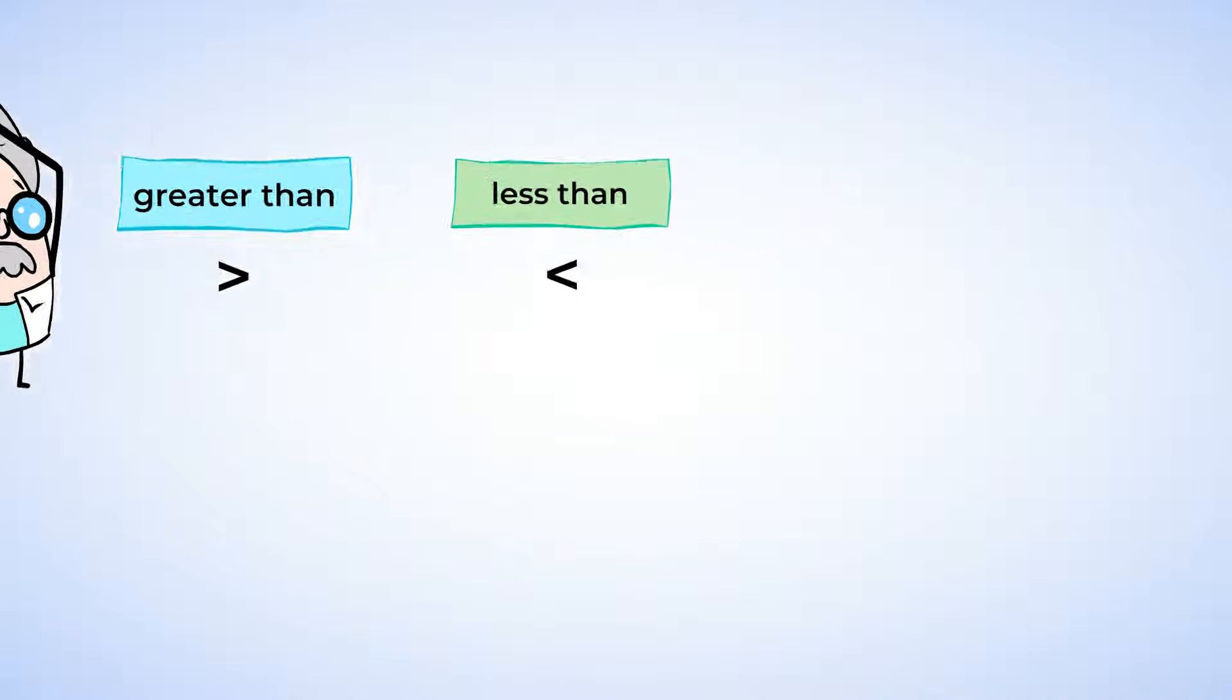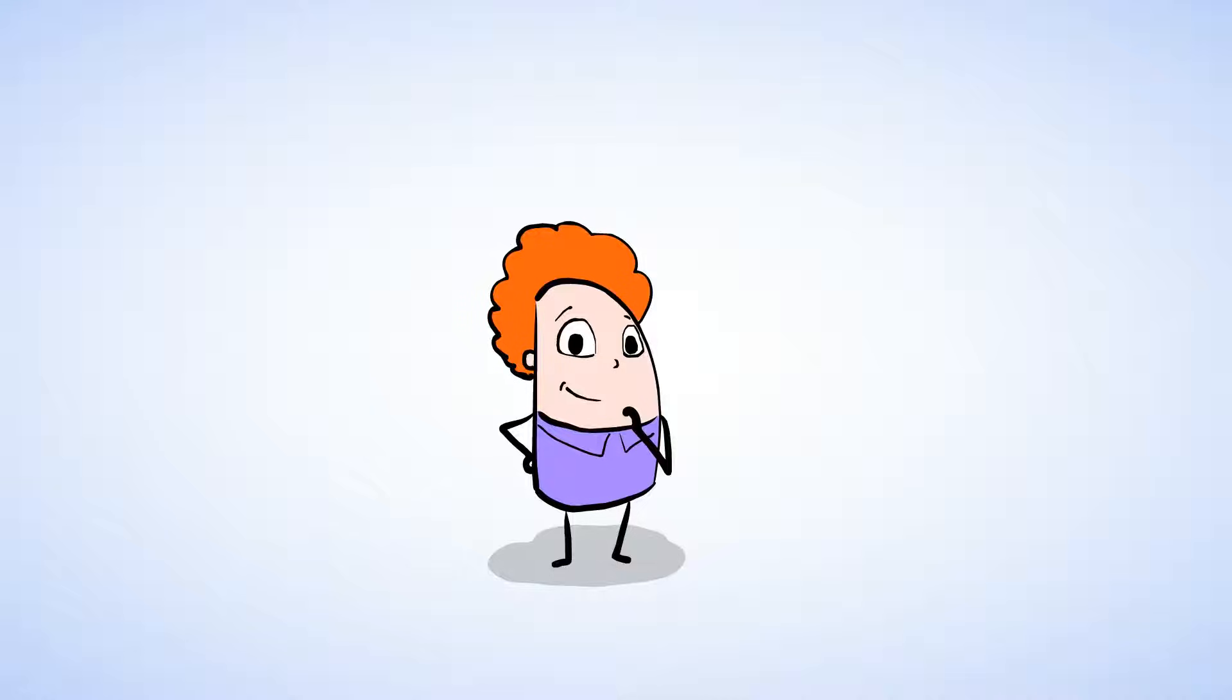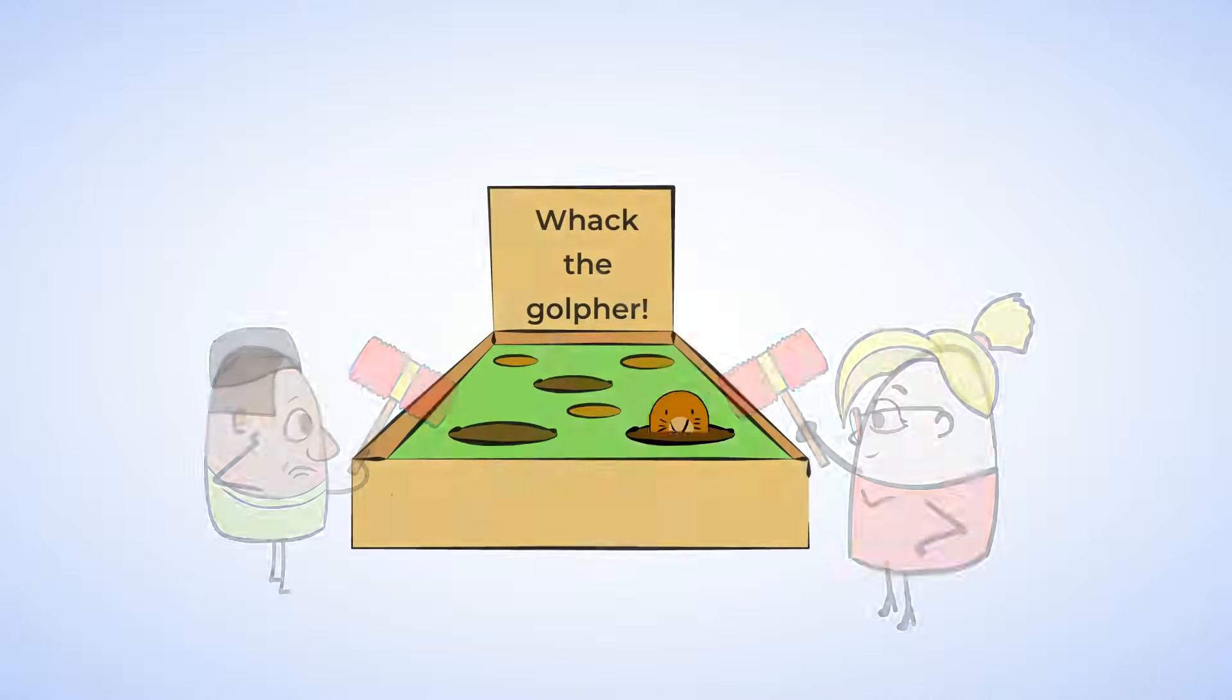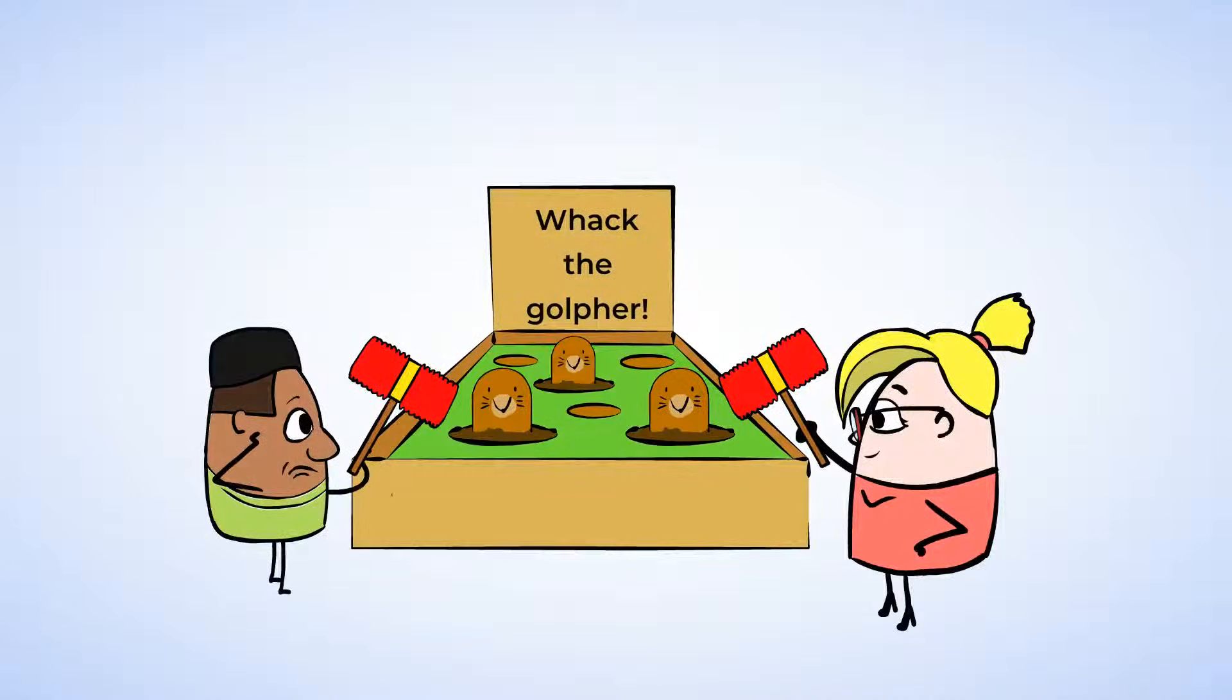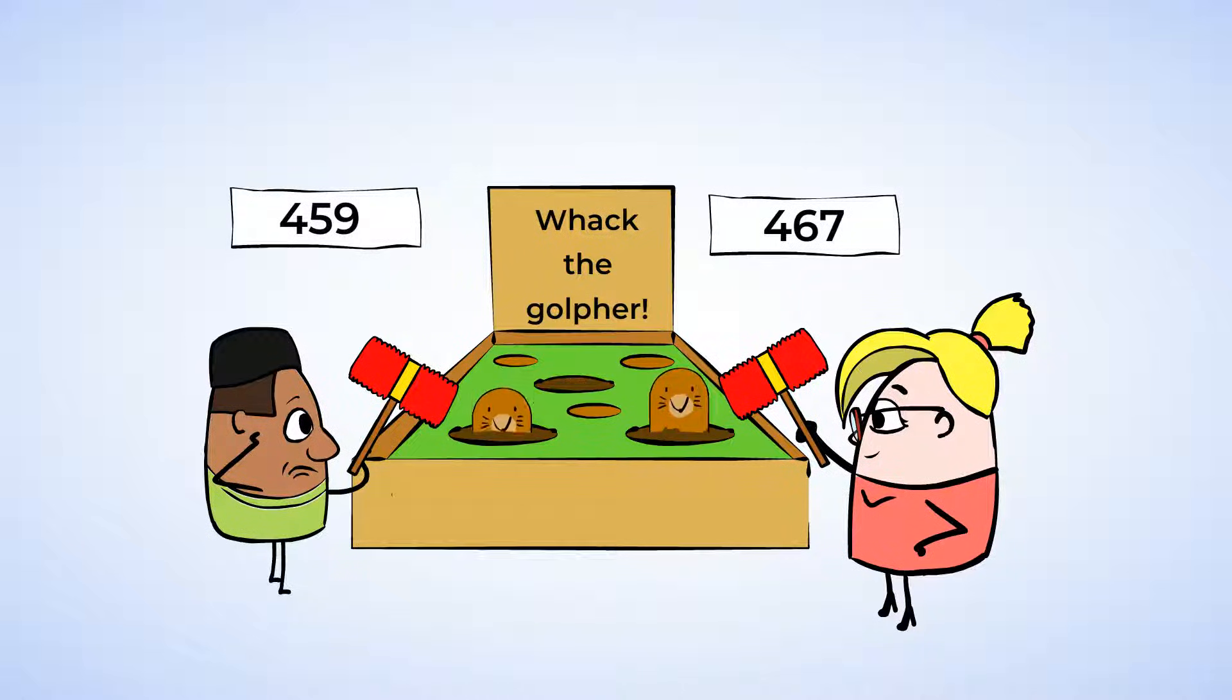Now let's see what other mighty games there are. Hey look, Jenny and Will are playing a game where you whack little gophers that come out of the game board. They're really good at this. Now let's see their scores. Jenny scored 467, and Will scored 459. Well, you know what to do. Let's put them in the place value chart.